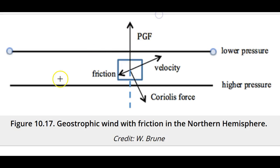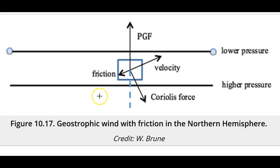Boundary layer turbulent drag turns the velocity across isobars toward low pressure, which causes convergence, while boundary layer turbulent drag turns the velocity across isobars away from high pressure, which causes divergence. These friction effects tend to amplify the convergence into surface low pressure and divergence from surface high pressure.